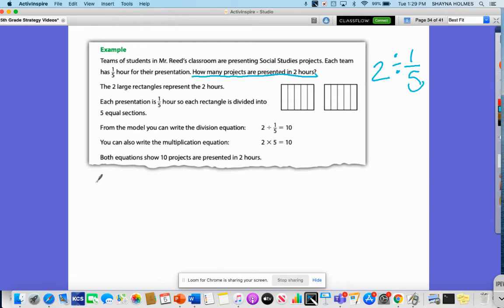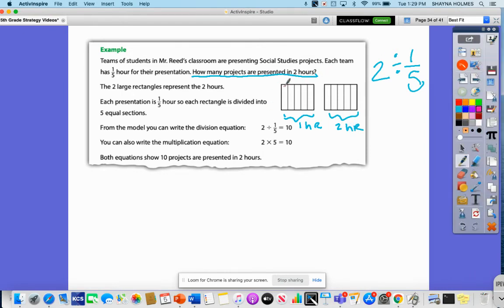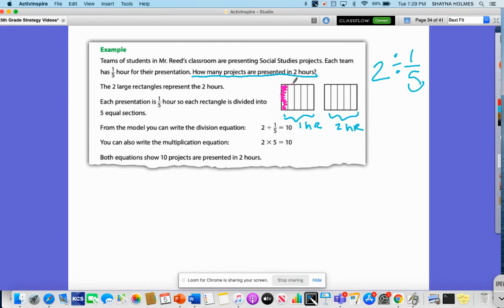Let's look at our example and our model. The two large rectangles represent the two hours - this would be one hour and this represents the second hour. We have each part divided into fifths: 1/5, 2/5, 3/5, 4/5, and 5/5. If each presentation takes 1/5 of an hour, I see that five projects can get done in an hour. So if five can get done in one hour, then I'd have another five in the other hour. So I would have 10 projects completed within the two hours. I can also think about this as 2 divided by 1/5 is the same as 2 times 5, which is 10.